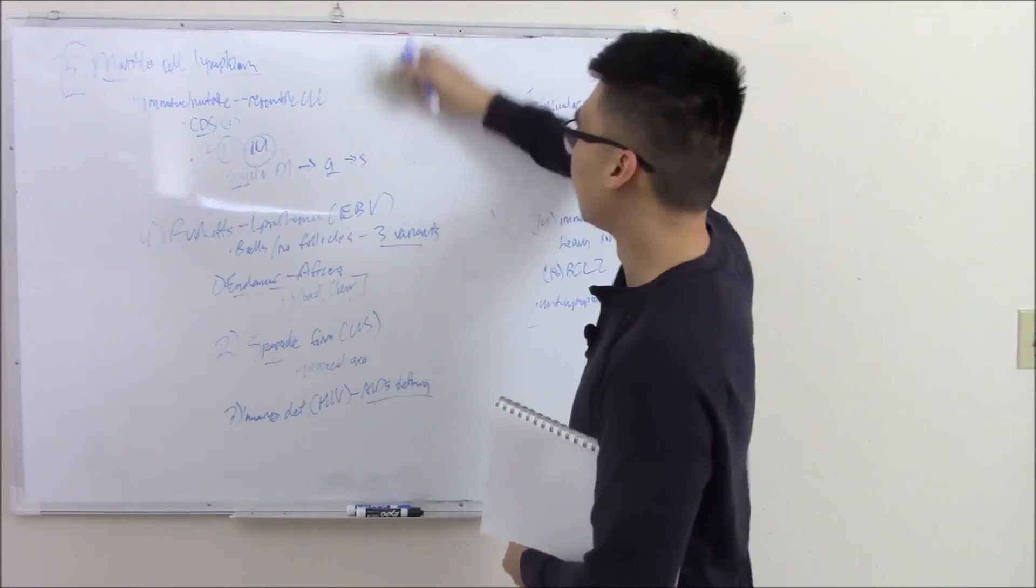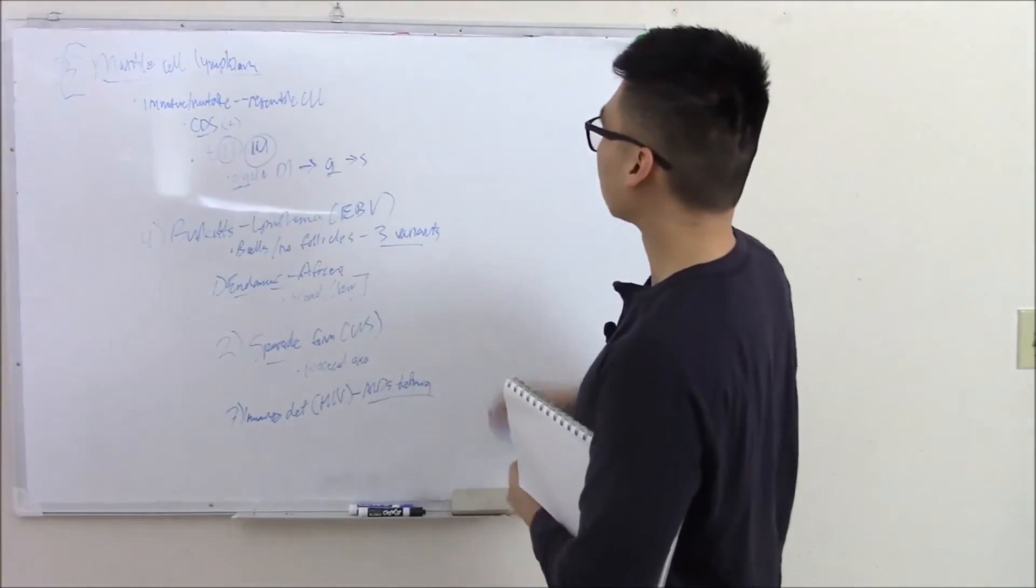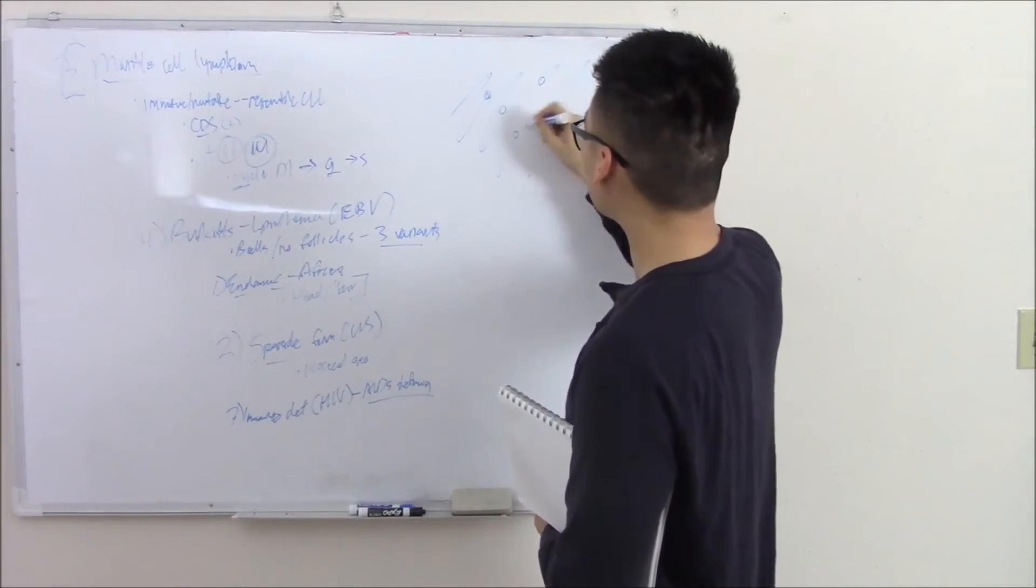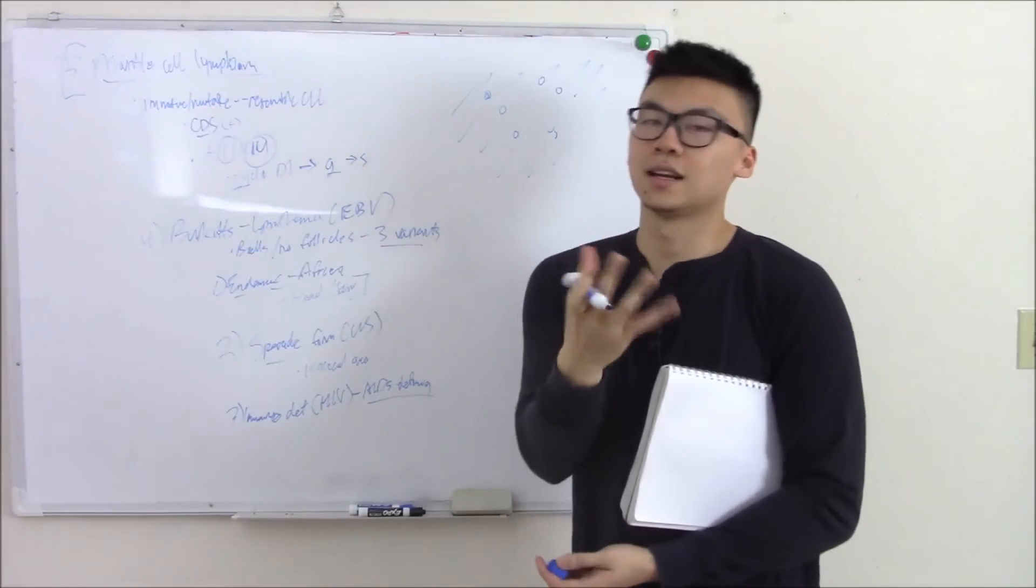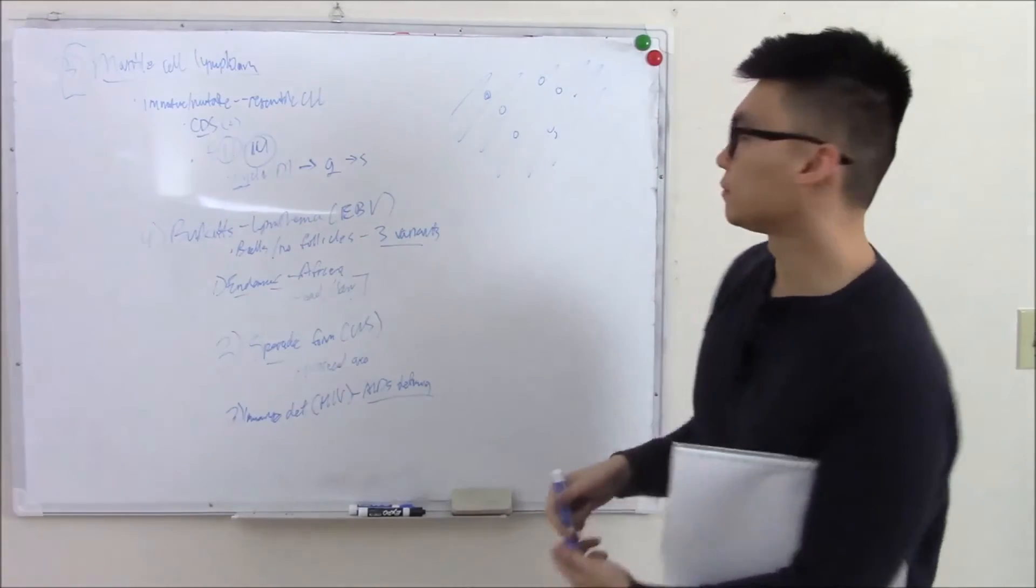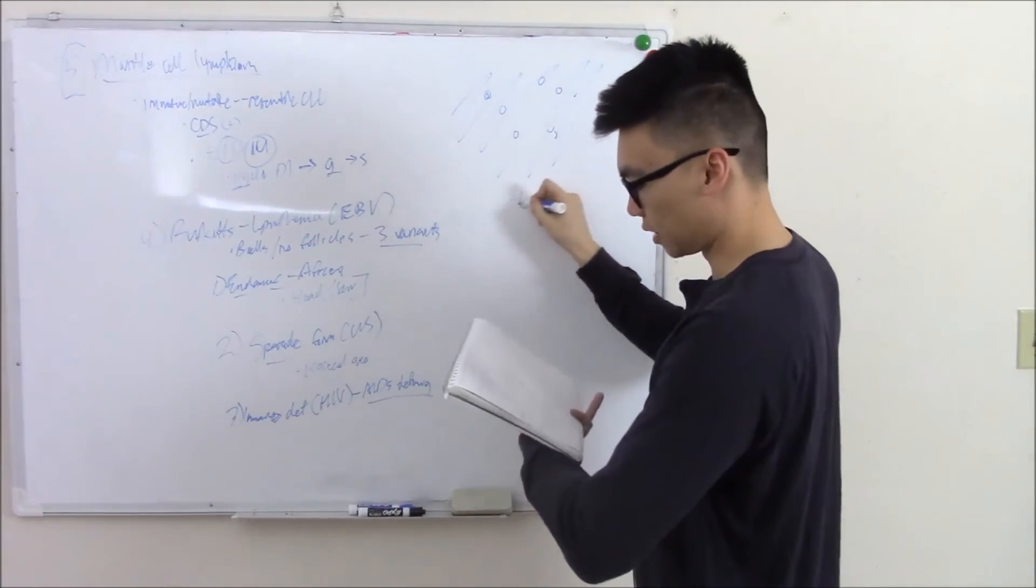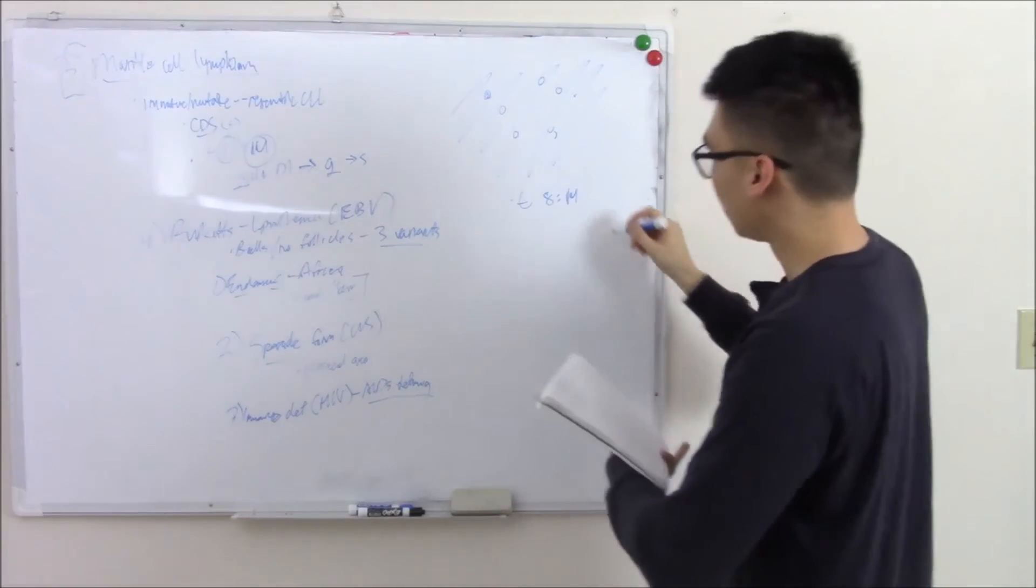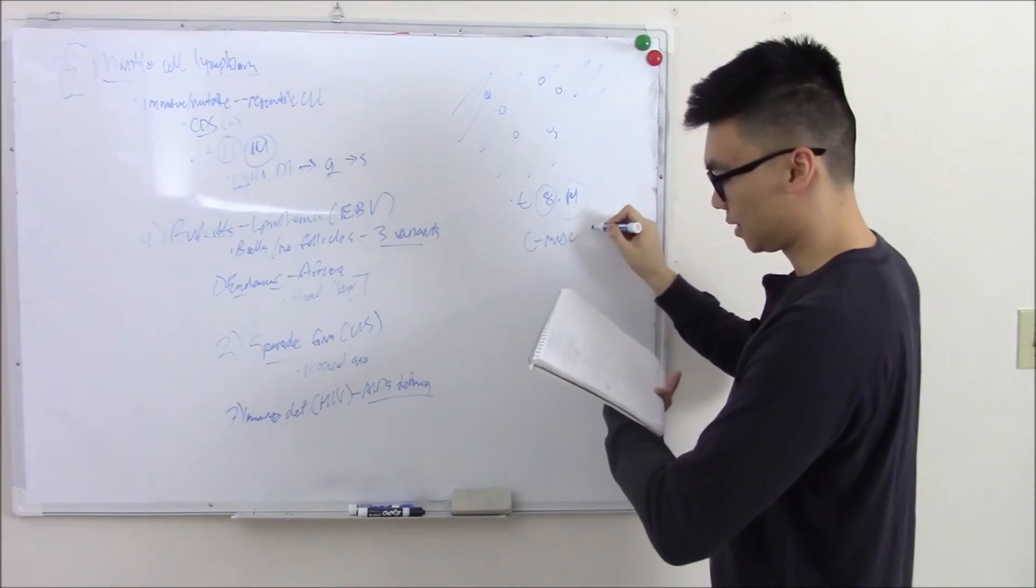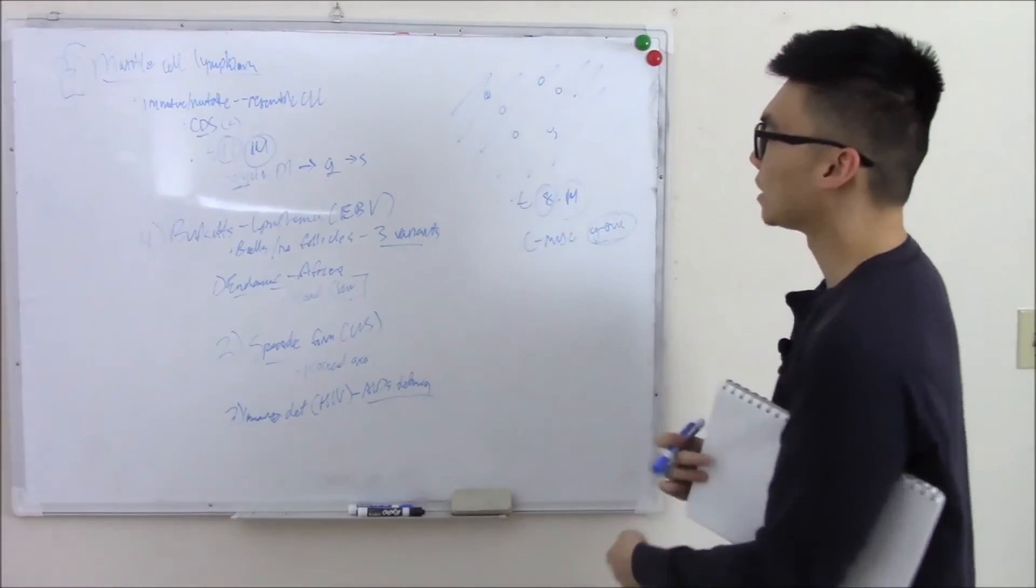Some classic histological findings of Burkitt's are called starry sky. The diffuse sheet of B-cells is basically the sky, and then the stars are going to be these large macrophages that make it look like a starry sky. There's a picture in my notes. That's what they classically call it. There's a chromosomal abnormality associated with Burkitt's that you must know, and that's your translocation of 8 and 14. Again, 14 is your immunoglobulin heavy locus. 8 is your CMYC gene. This gene creates a protein that causes cell progression. If you have overexpression of it, you have constant cell progression.